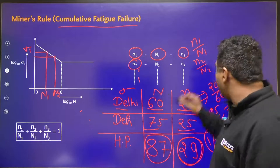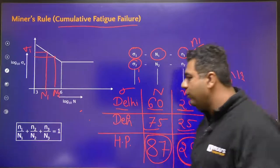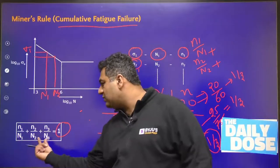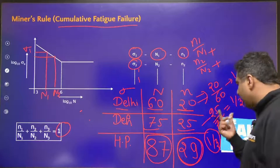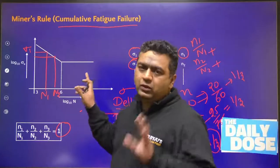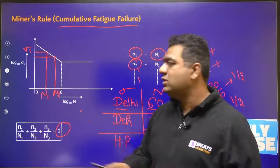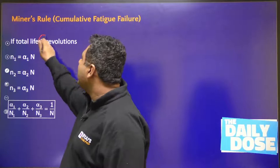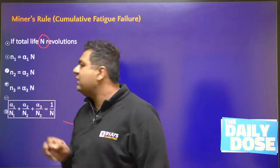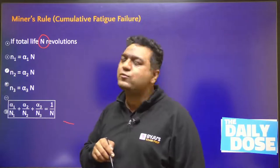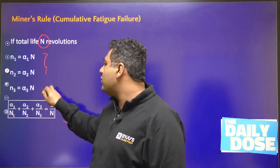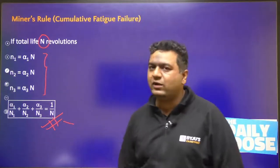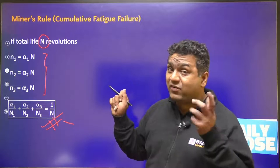Similarly, at others. Overall, when you add all these life fractions, it should equal 1 because total life is 1. So the summation of these three will come out to be 1 — like here, 1/3 + 1/3 + 1/3. If we know the total life of the component is capital N, then you can write small n1 as alpha 1 times N, small n2 as alpha 2 times N, and put the values of N1, N2, and N3. You will get this equation. This is also Miner's Rule of cumulative fatigue failure, where alpha 1, alpha 2, alpha 3 are the fractions of life.